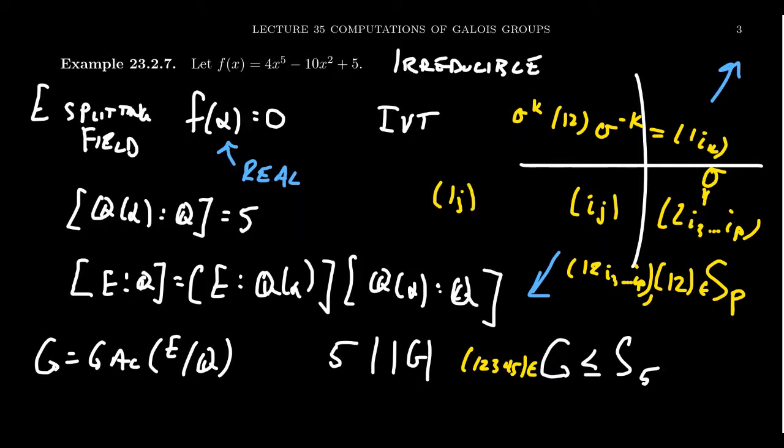You can get everything: one two, one three, one four, one five. And if you want to construct the two cycle like ij, this is going to be the product of one j times one i times one j. This shows you that you have all arbitrary two cycles, and if you have all the two cycles, that's a generating set for Sp. That argument applies in this S5 case.